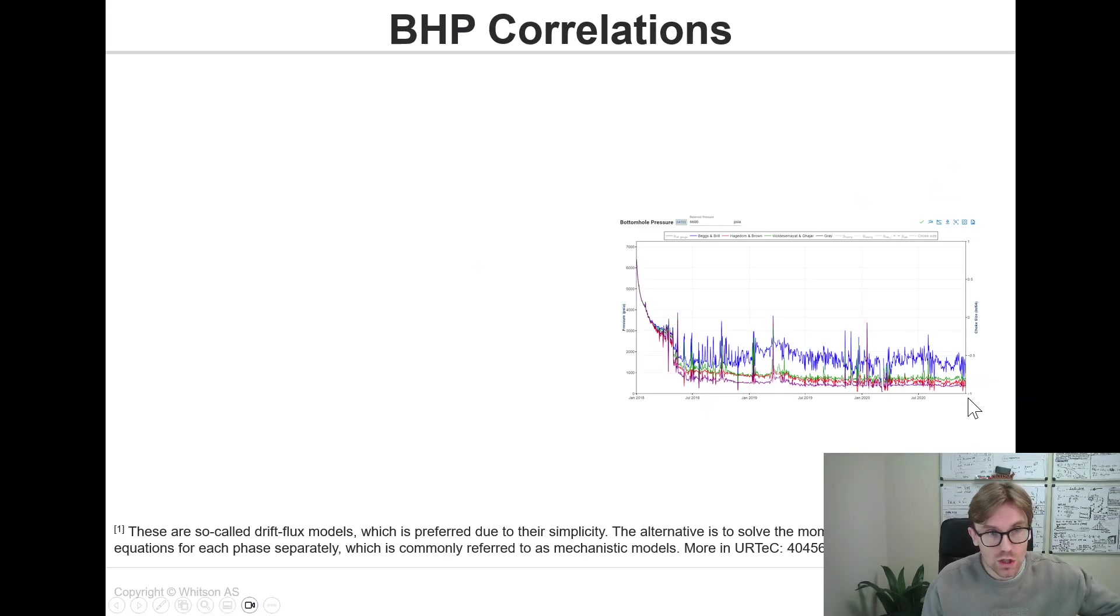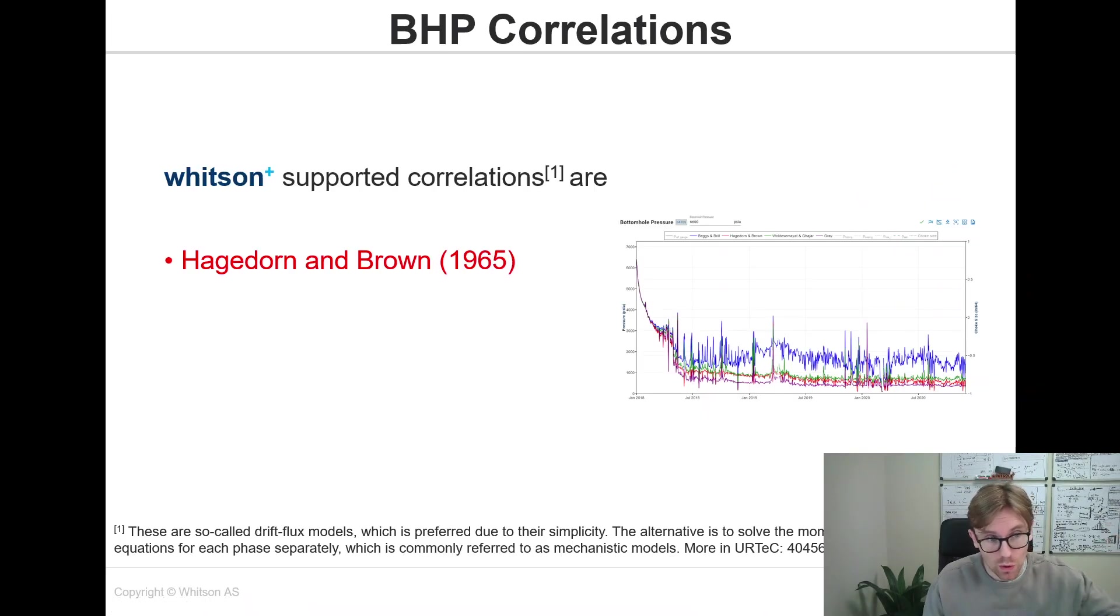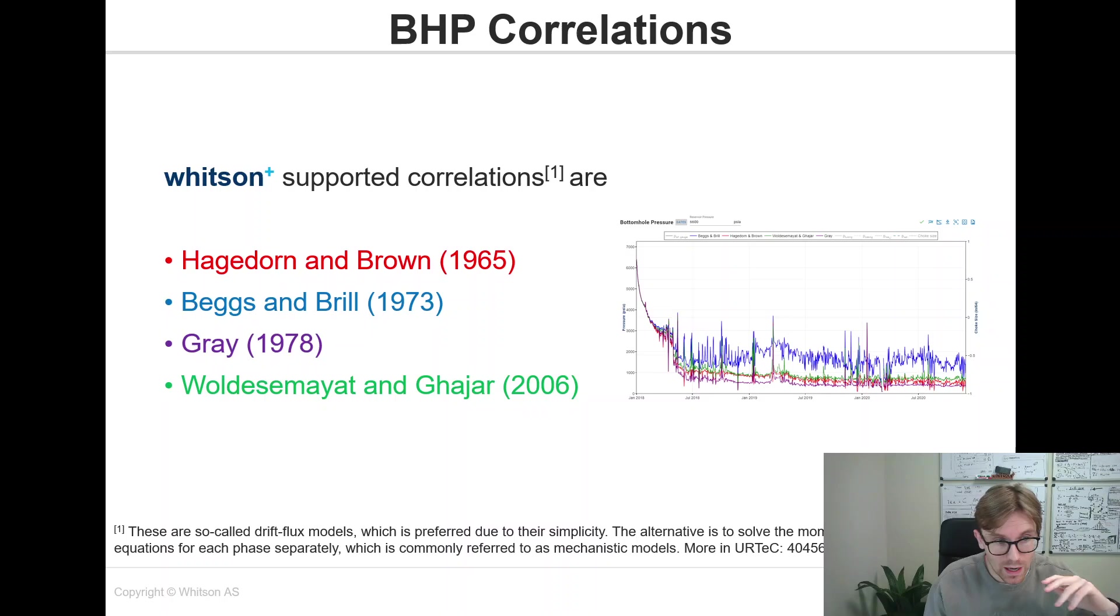Real quick, what correlations do we actually support in Wits and Paws? We support Hagedorn and Brown, Beggs and Brill, Gray, and Woldesemayet and Ghajar. All of these are so-called drift flux models, which are preferred typically due to their simplicity. The alternative to this is momentum and energy equations where you basically solve for each of the phases separately. This is what we refer to as mechanistic models. That is not something we have in Wits and Paws yet, but maybe that will come in the future.